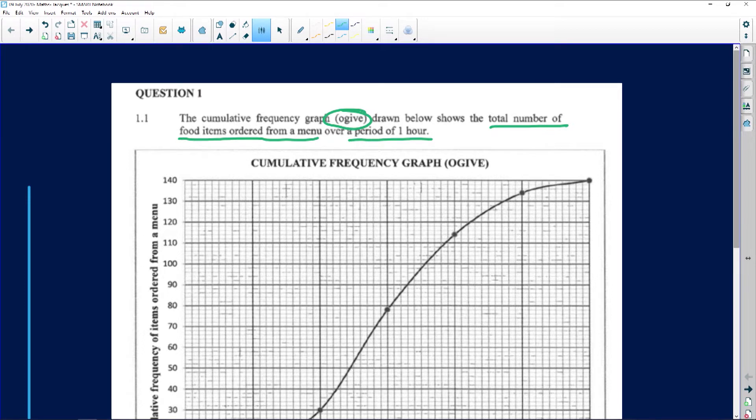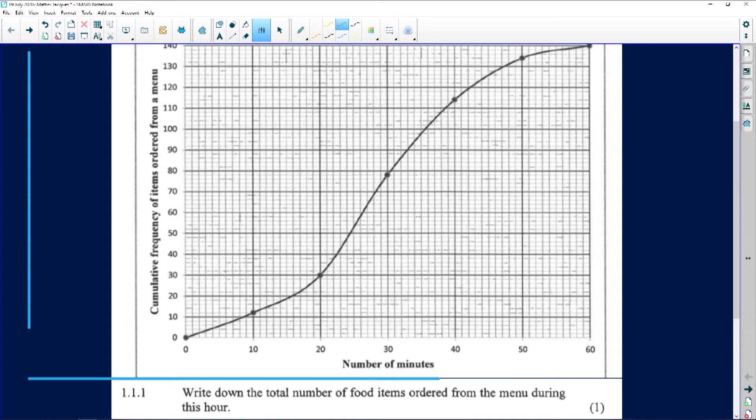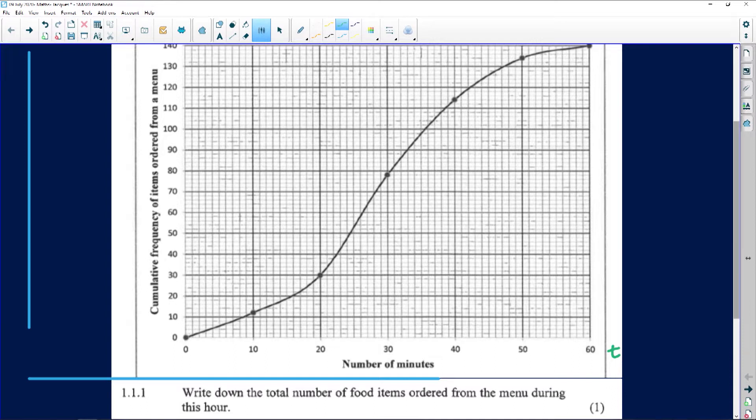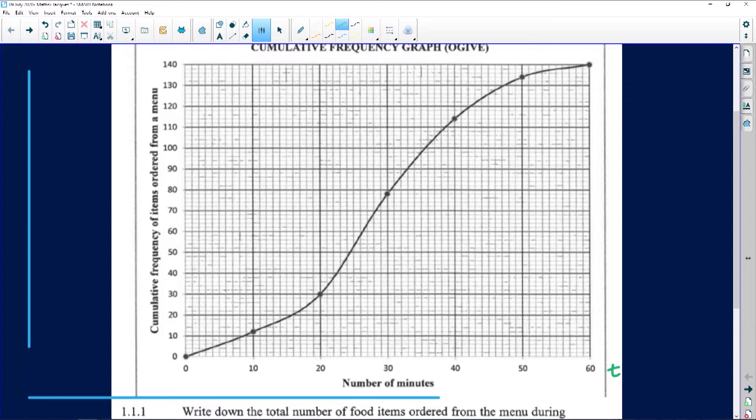Okay, so my vertical axis represents the total number of food items ordered from the menu, and then the horizontal axis represents the time. So this is the traditional x-axis, which represents time for us. If we look at this graph, it's anchored at 0, at 10 it looks like it's going to be at 12, 20 at 30, 30 we'll have to draw our lines across, but it looks like 78, and it finishes after 60 minutes with 140 items ordered off this menu in the hour.